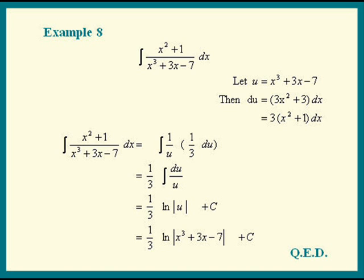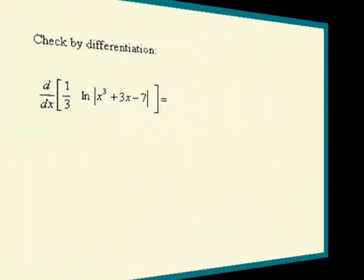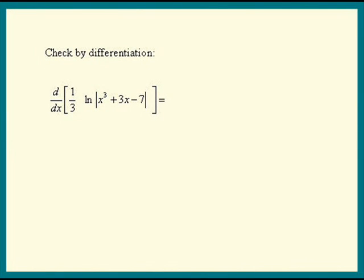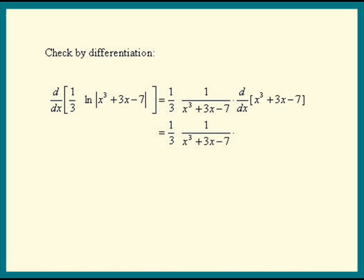Let's check our answer by differentiating. We get the constant factor 1 third times the derivative of the log part. Differentiate log of anything, you get 1 over that thing times the derivative of that thing. Copy everything in front. We get 3x squared plus 3.